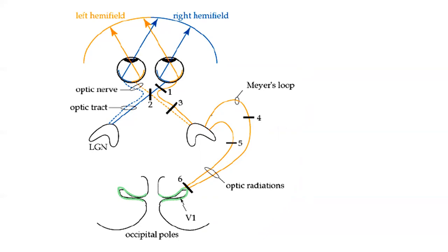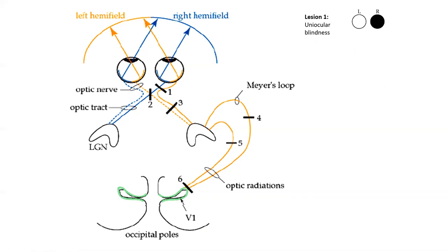We look first at position one — a lesion anterior to the optic chiasm. It is only impacting the nerves of one eye. Here we have it as a right-side example, but it could also be on the left. Whichever side it's on, if it's anterior to the optic chiasm, it's going to produce monocular blindness. We're not seeing any of those crossed fibers, and it's anterior to where we would have bilateral effect.